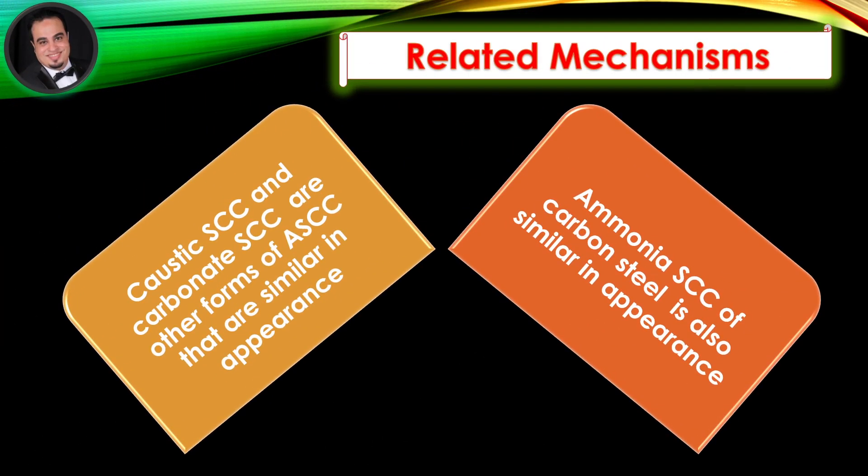Related mechanisms: caustic stress corrosion cracking and carbonate stress corrosion cracking are other forms of alkaline stress corrosion cracking that are similar in appearance. Ammonia stress corrosion cracking of carbon steel is also similar in appearance.